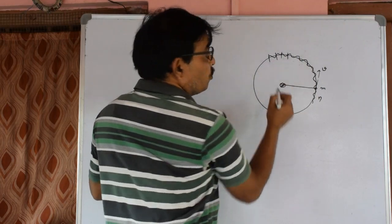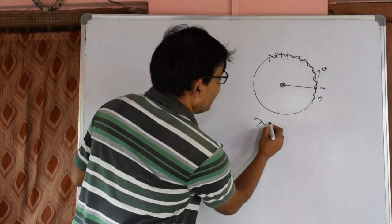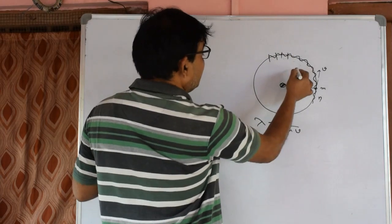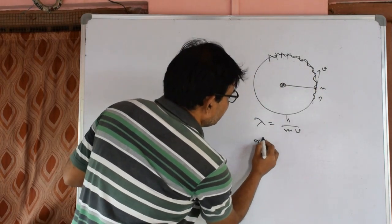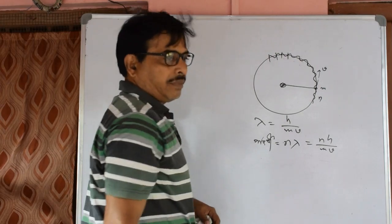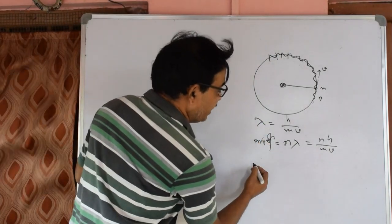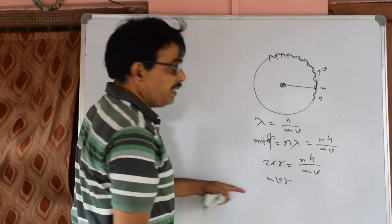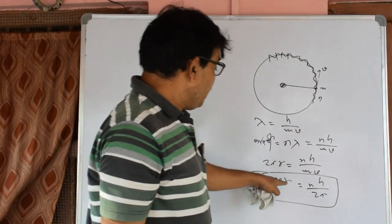When n is equal to a given value, if n equals b, we will have a number of per-m states. And mvr equals nh over 2pi. You can see that this is the very essence of quantization — mvr equals nh over 2pi.